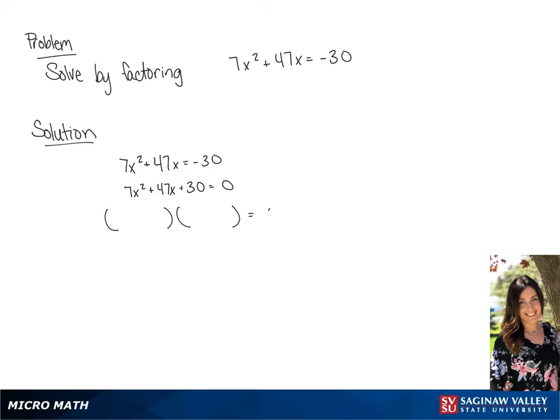Now we're going to factor it into two binomials. So the first terms in our binomials are going to be 7x and x. Now we want to factor the 30. So our second term is going to be 5 and 6. So we have 7x plus 5 times x plus 6 is equal to 0.